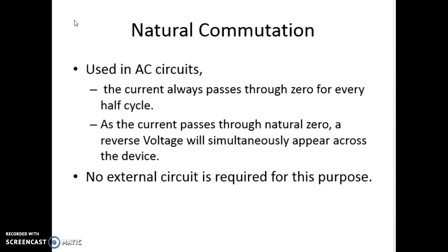Natural commutation happens in AC circuits. In an AC waveform, there is a positive half cycle and a negative half cycle, so every half cycle the current passes through zero — meaning the anode current becomes less than the holding current. That condition is met naturally, and as the current passes through the natural zero, a reverse voltage will simultaneously appear across the device. So natural commutation occurs in AC circuits without any external circuit.